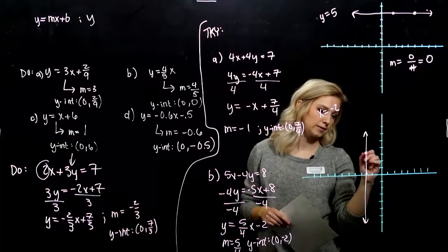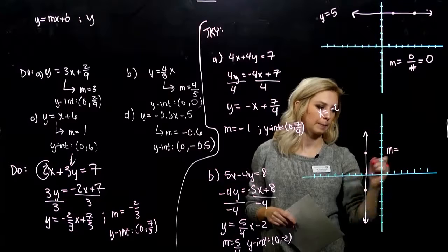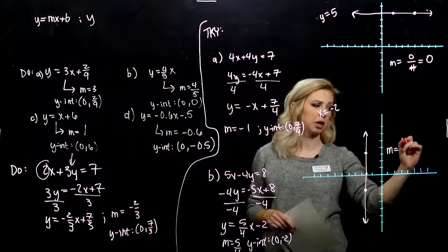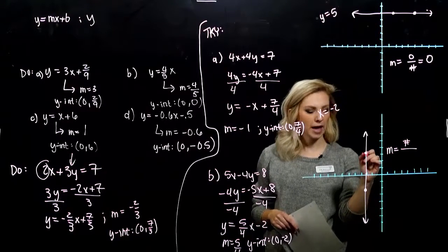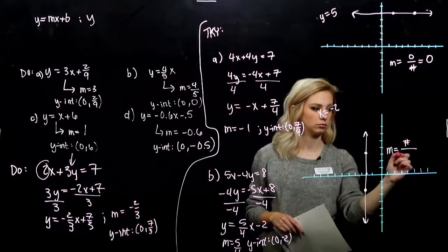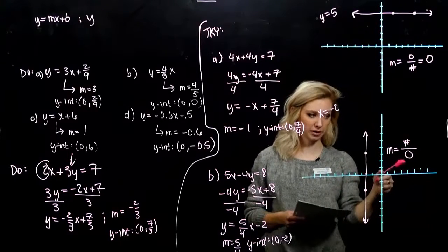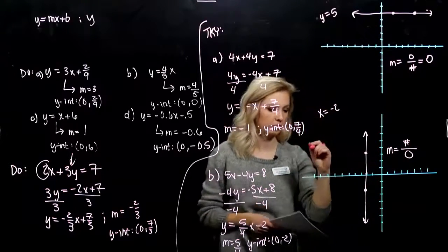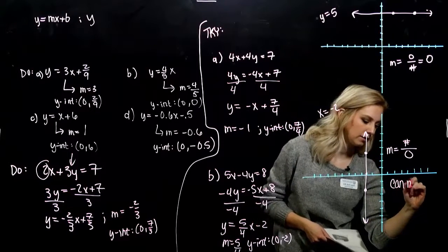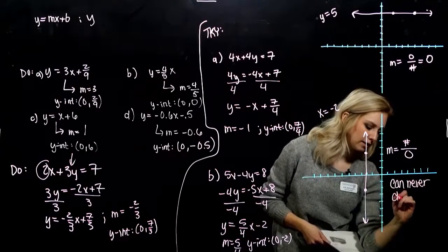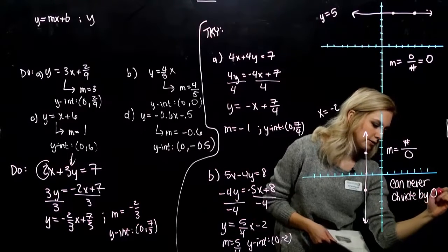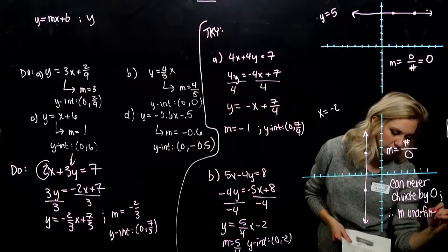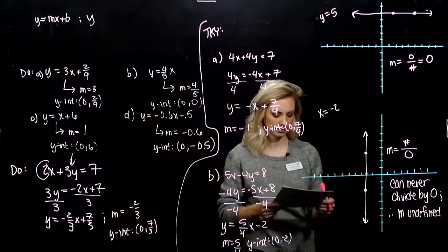And again, let's just pick some points. I'll pick here and here. So how many do I have to rise to get from this point to this one? Some number. Okay, and then how many do I have to run? None. But with fractions, what can we never do? We can never divide by zero. So, therefore, m is undefined. Whenever we try to divide by zero, that value is undefined.